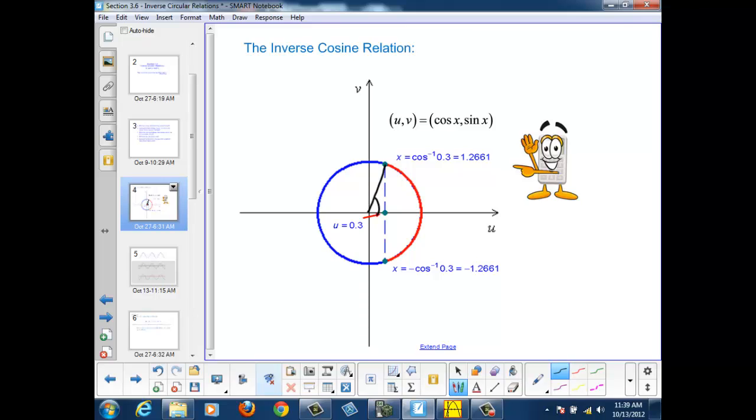However, there's an issue, because that's not the only place on the unit circle where the u coordinate is 0.3. We also have this point down here in the fourth quadrant. So we have two answers.